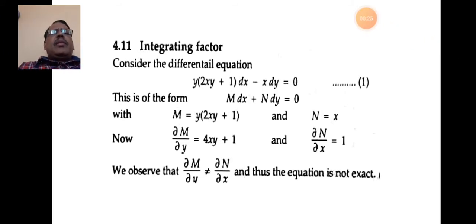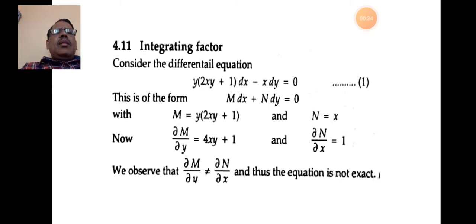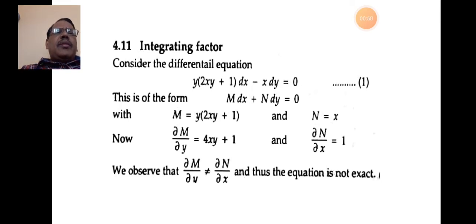Consider the differential equation y(2xy + 1)dx − x dy = 0. This is of the form M dx + N dy = 0, where M = y(2xy + 1) and N = −x. We differentiate M with respect to y and N with respect to x. ∂M/∂y = 4xy + 1 and ∂N/∂x = 1. We observe that ∂M/∂y ≠ ∂N/∂x, and hence this is not an exact differential equation.